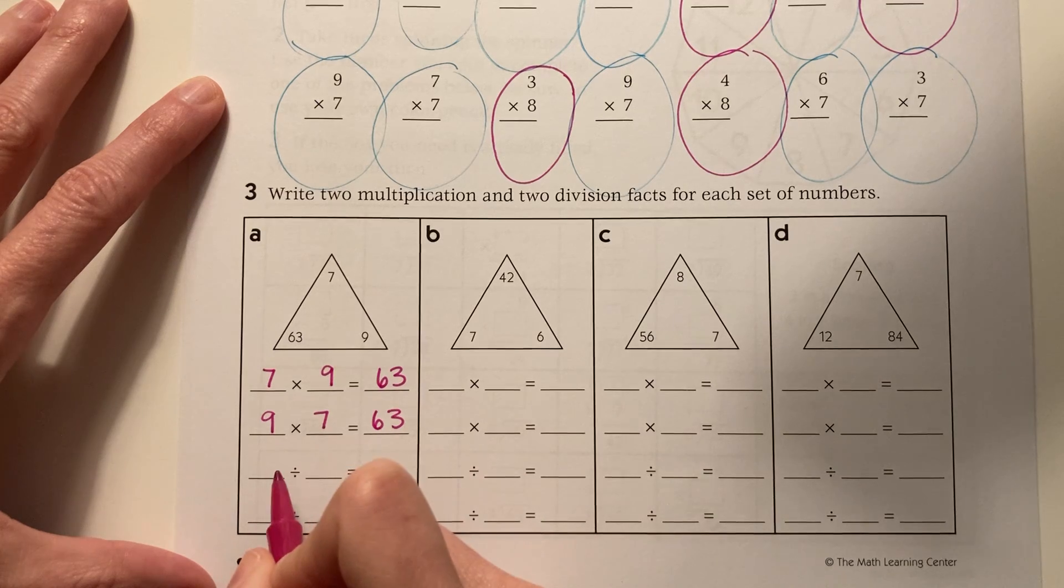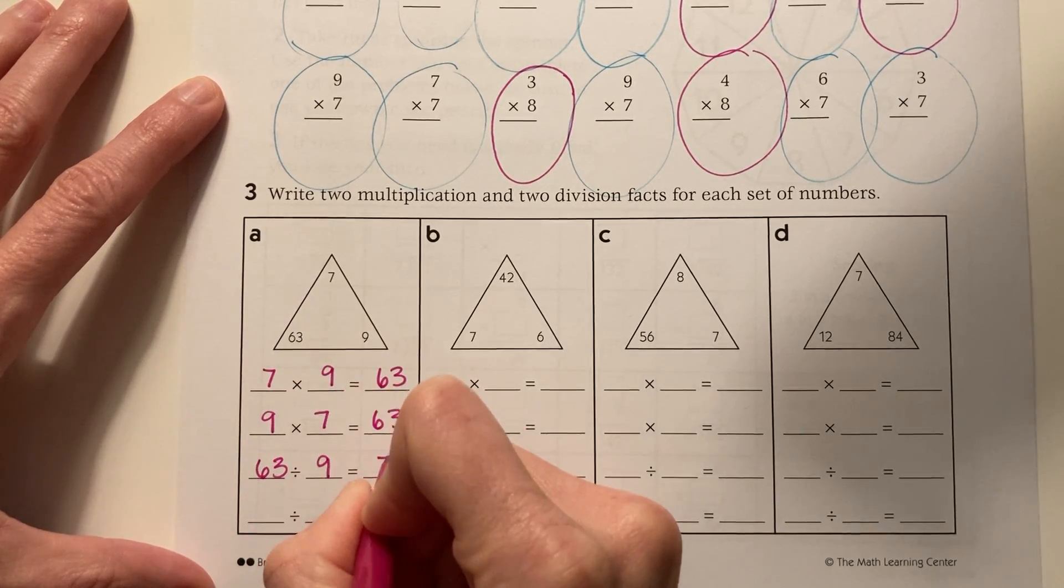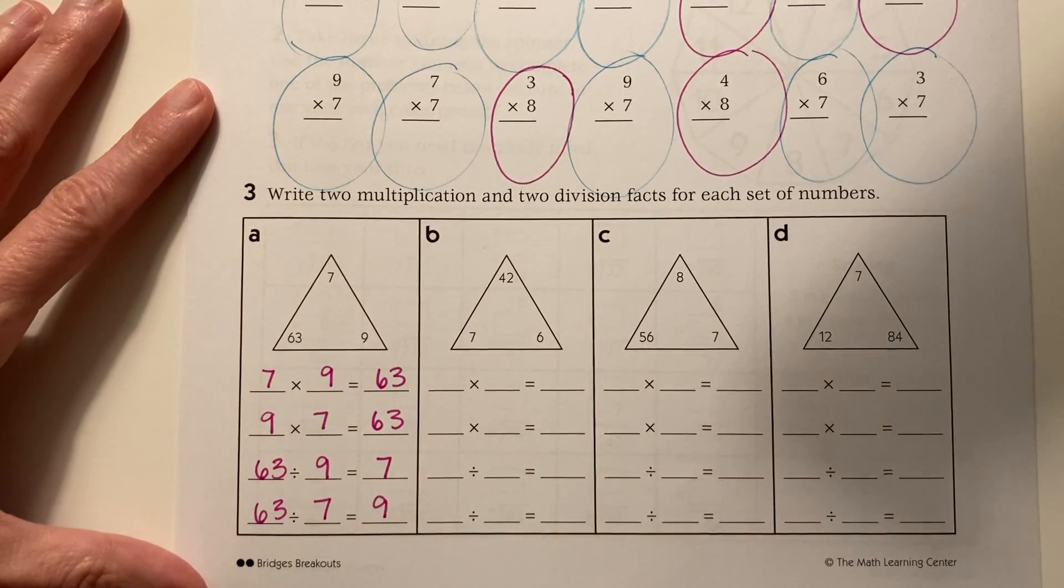Then take my product and turn it into the dividend. Dividend, divisor, quotient. Dividend, divisor, quotient. And then do the same for the rest.